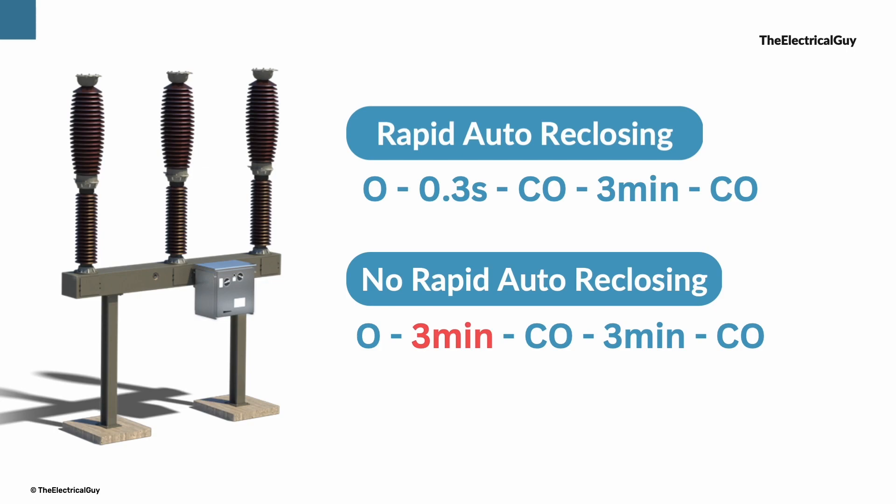If the first timing is 0.3 seconds, then it means it is for rapid auto reclosing. And if it is 3 minutes, then it is not meant for rapid auto reclosing. Just take a note of that. These auto reclosing cycles are defined by the different standards. Like this one is defined by the IEC standards. IEC also defines one more duty cycle which you can see on your screen.